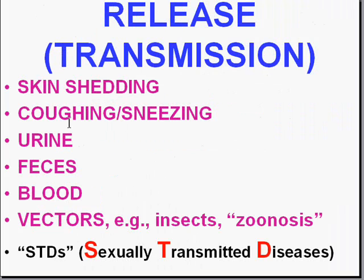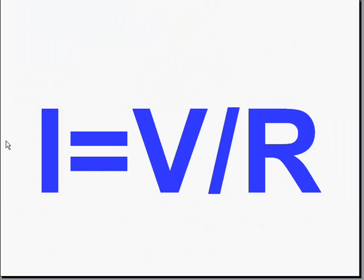When we talk about release or transmission of pathogens — no matter what type of organism we're talking about — one of the ways to release a pathogen is anatomically possible: skin shedding, coughing or sneezing, through the urine, through the feces, through the blood, or by virtue of vectors — another type of organism, usually an insect, which acts as an intermediary in the dissemination of the pathogen. Another general route, not quite as anatomically straightforward, is what we call STDs — sexually transmitted diseases — which are usually mucosal or blood-fluid oriented.